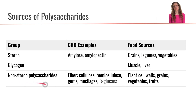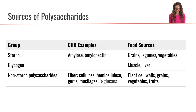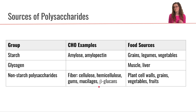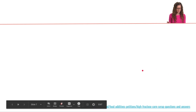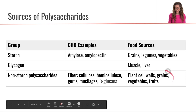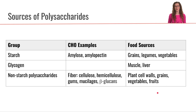Then there are all the non-starch polysaccharides, which are the whole plethora of different types of fiber that we don't have the enzymes to digest. Examples include cellulose, hemicellulose, gums, mucilages, and beta glucans — remember we talked about beta glucan from oats last time. Sources of these non-starch polysaccharides are plant cell walls, where they help give plant cells their structure, as well as different kinds of whole grains, vegetables, and fruits. There's a large diversity of non-starch polysaccharides out there in plant foods.